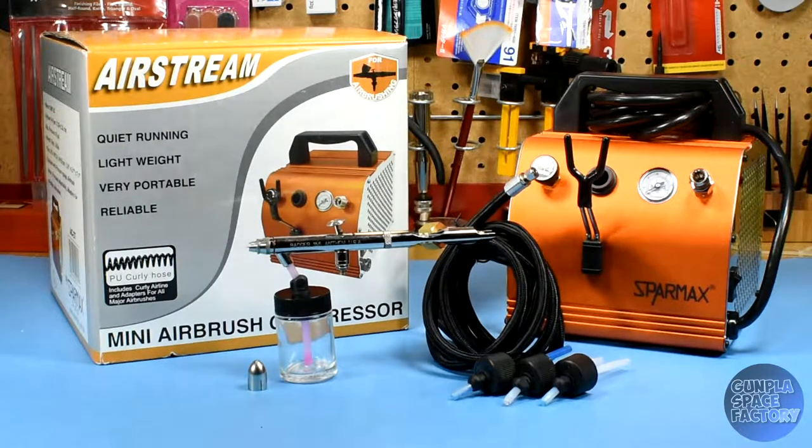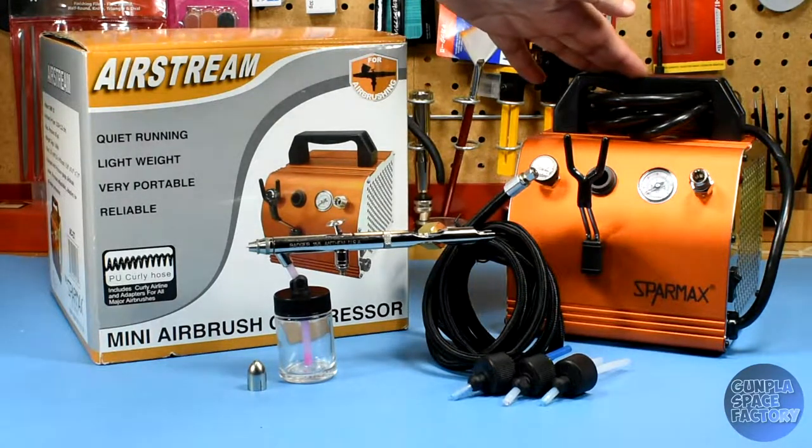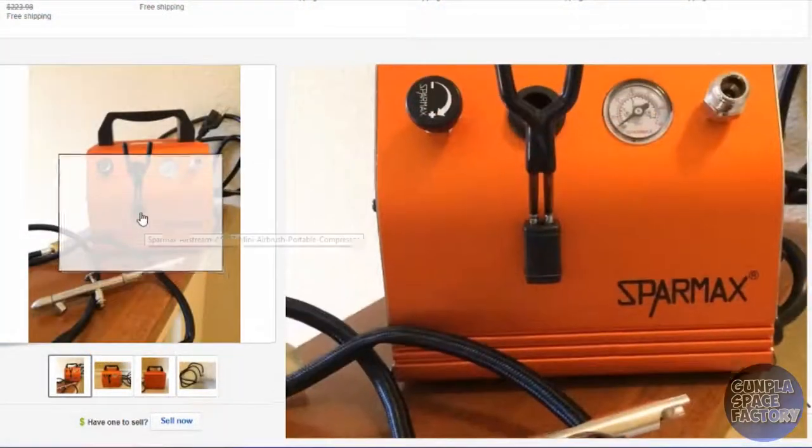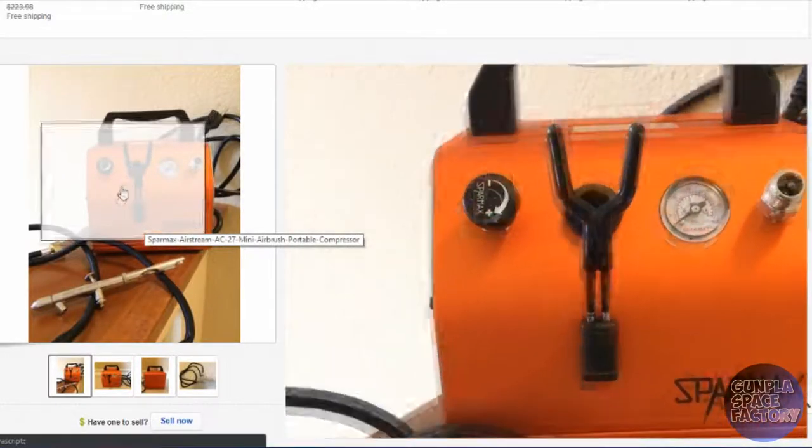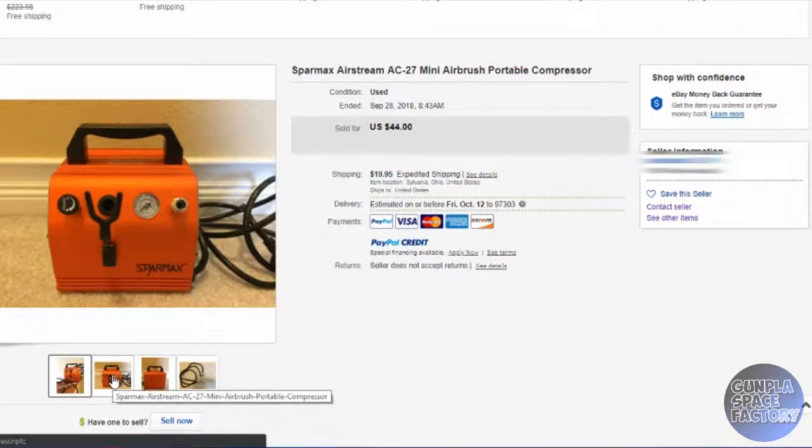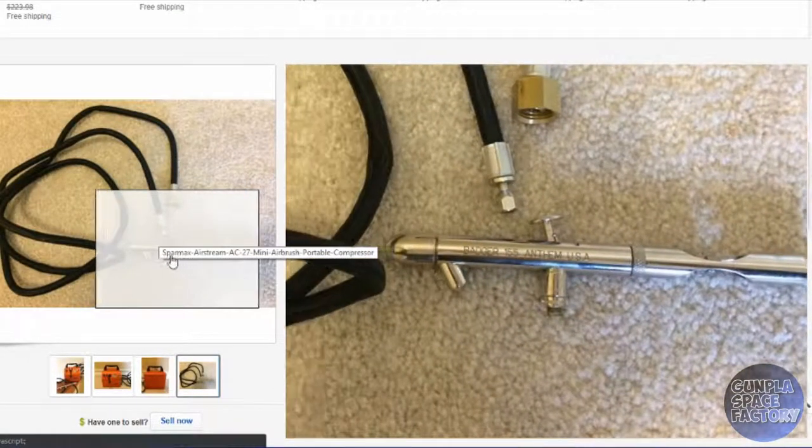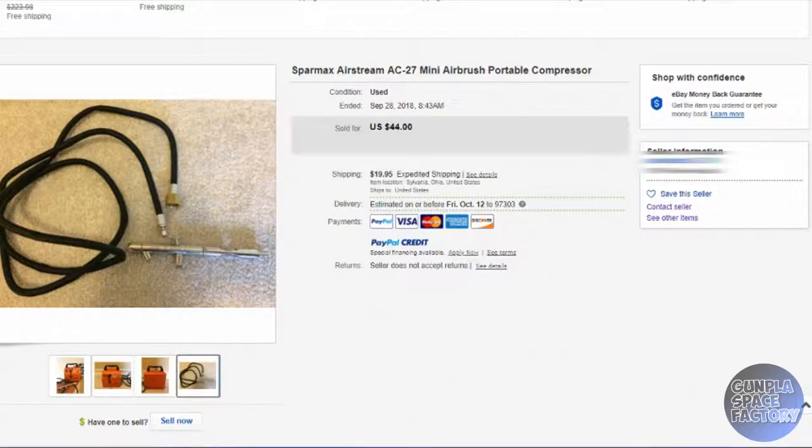These are an eBay find that I purchased together for, kid you not, just under 64 US dollars shipped. While browsing the bay a few days ago I saw a listing for a SparMax AC27 compressor for $44 plus shipping cost. That alone was already a very good deal but what really caught my eye was the airbrush pictured with it.